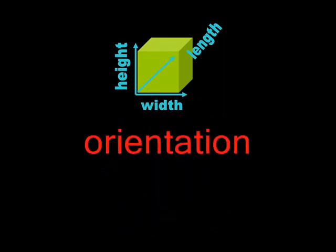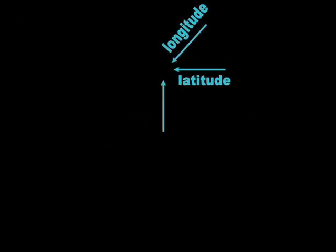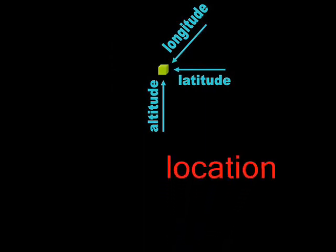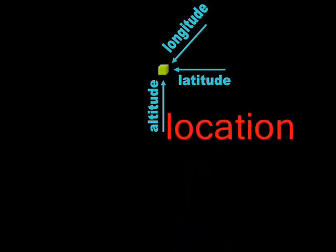Dimensions point outwards from an object. The three coordinates are known as longitude, latitude, and altitude. Unlike dimensions, they are used to specify location and point inwards towards the object.